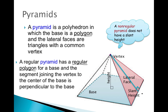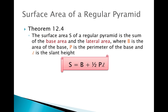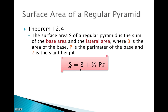Now that we have all these definitions in place, let's move on to a theorem. The surface area of a regular pyramid can be determined by the sum of the base area and the lateral area. The formula is: S equals B plus one-half times P times ℓ, where B is the area of the base, P is the perimeter, and ℓ (written as a cursive L) is the slant height.